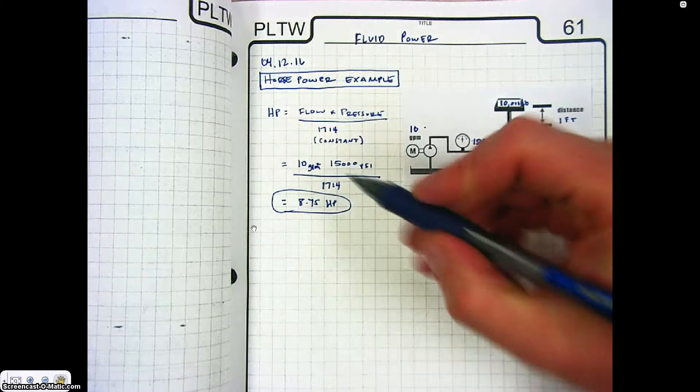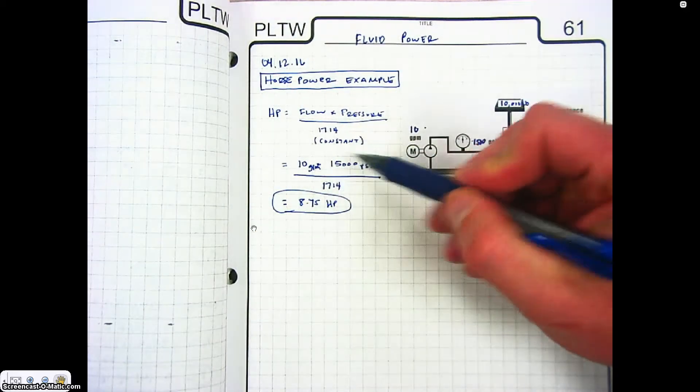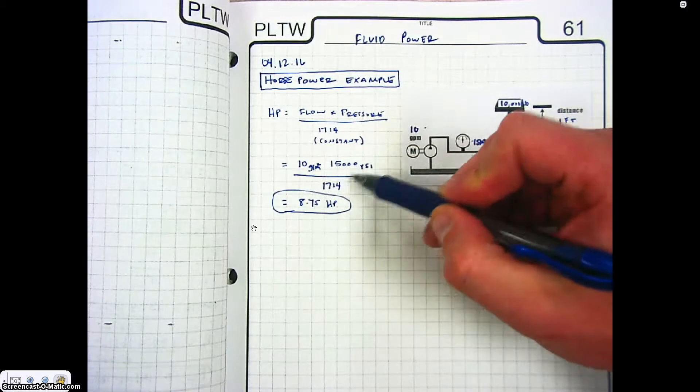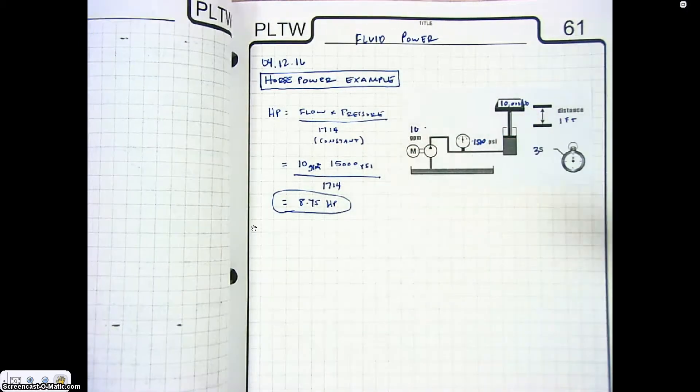So again, this 1714 is a constant number that gets the gallons per minute and the pounds per square inch back to horsepower.